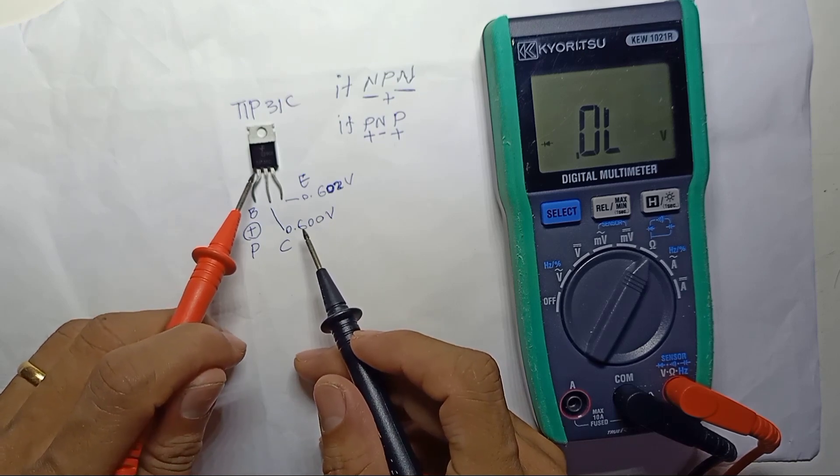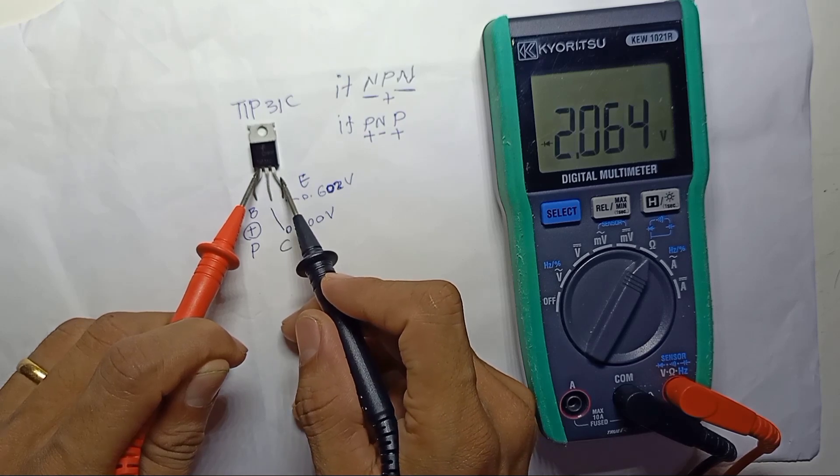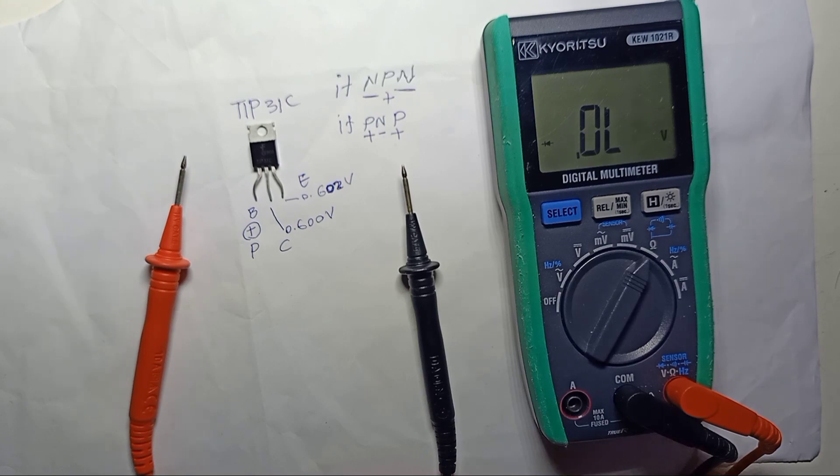The first pin is base. Second pin is collector. The third pin is emitter. So I hope you like this video and thank you for watching.